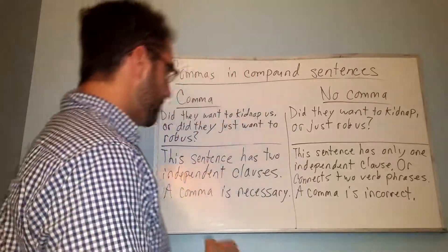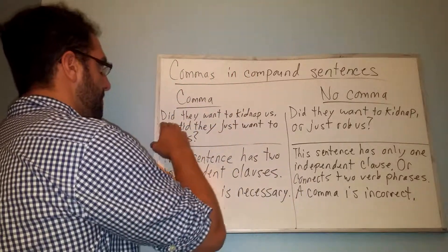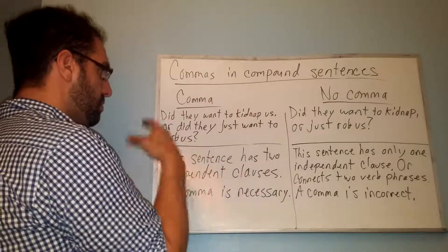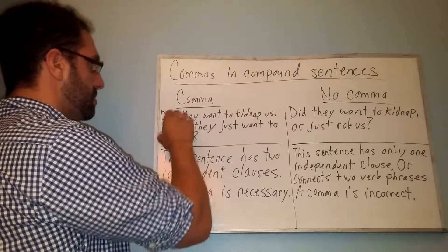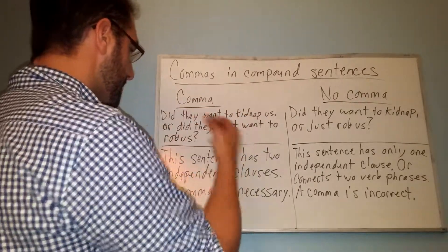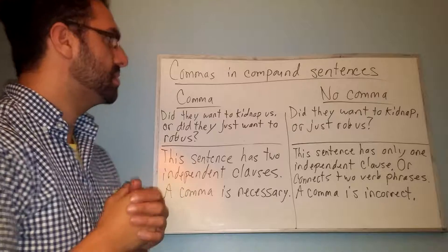So what we have here is another example: 'Did they want to kidnap us, or did they just want to rob us?' This is an example where you want to use a comma because it has two independent clauses, so you could use the comma before the word 'or' over here.